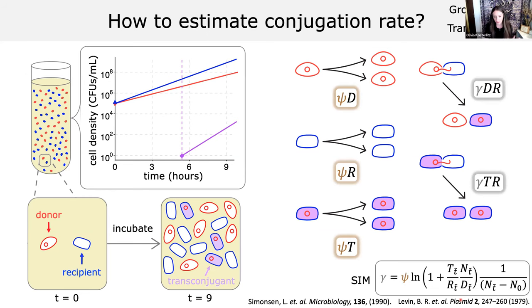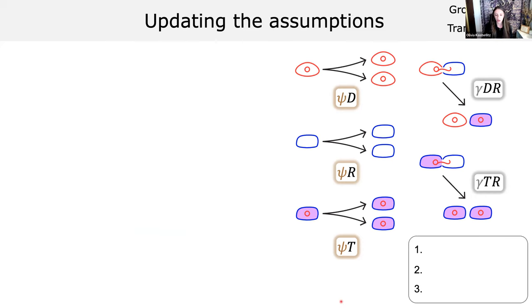Later, we got the Simonsen method because they found an analytical solution to these differential equations — I'll refer to this conjugation rate estimate as the SIM method. The SIM method gives you everything you need to measure in the laboratory: initial population size, final population size, and estimates of density for your three populations at a critical time point, as well as the max growth rate.